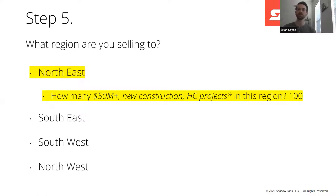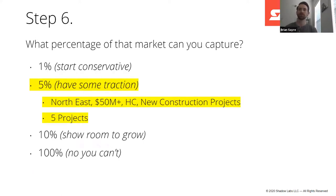Next, dig into region. What specific area are you going to target and sell to first? How many $50 million-plus new construction healthcare projects are there in this region? Our offices are in New York, so we're going to start in the Northeast. Then, what percentage of that market can you actually capture? 1% if you're just starting out — be conservative. 5% if you have some traction. 10%? Don't go there yet; show us room for growth. 100%? Nobody gets 100% of any market. So at 5% of Northeast $50M-plus healthcare new construction projects, we estimate capturing five of those.